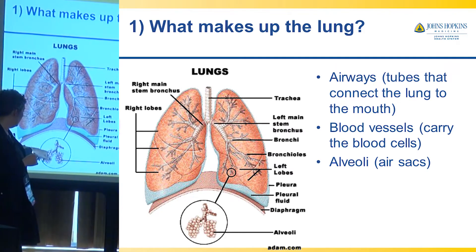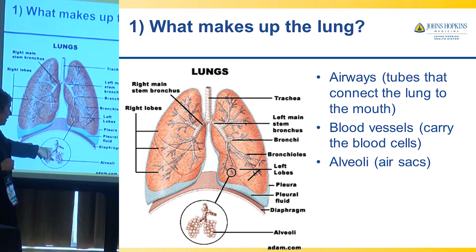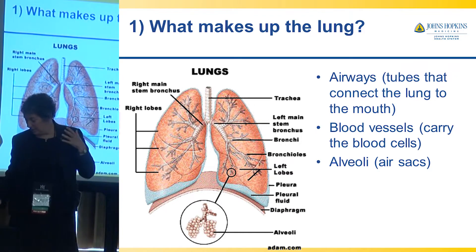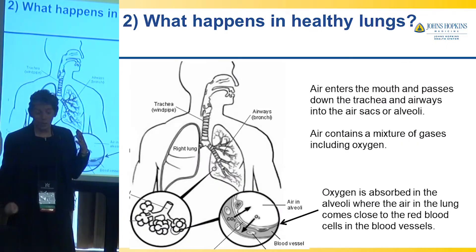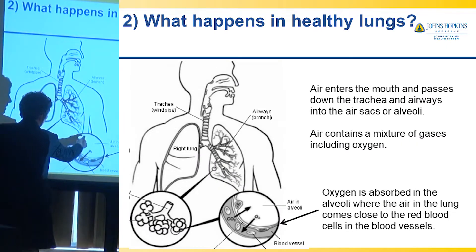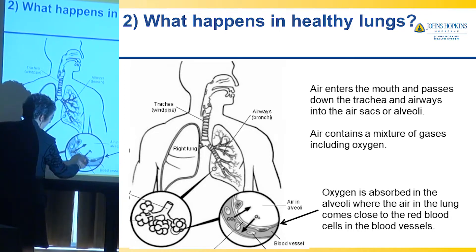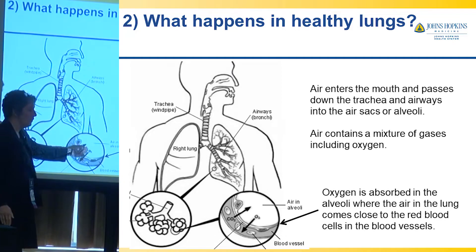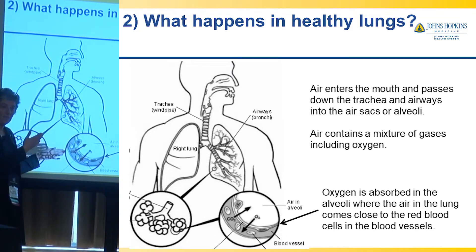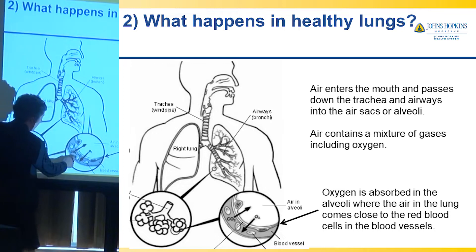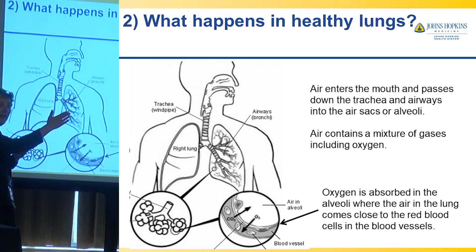And then there are these very fine structures called air sacs or alveoli. In that very tiny space, the air in the alveolus is brought very close to the blood vessels where there are red blood cells. Oxygen actually diffuses or passes across that membrane and binds to the red blood cells, which carry the oxygen out to your tissues.